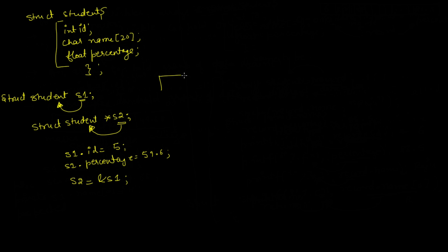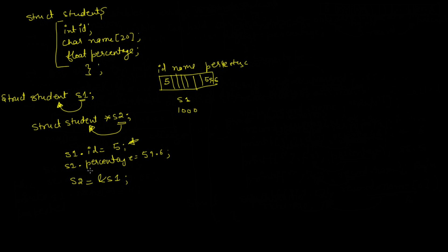Let me diagrammatically represent this. This is our structure and the name of this variable is s1. In s1 we have the id part, the name part, and the percentage part. We have stored 5 and 59.6 here. Let's suppose the address of this structure is 1000, so s2 is storing the address 1000.